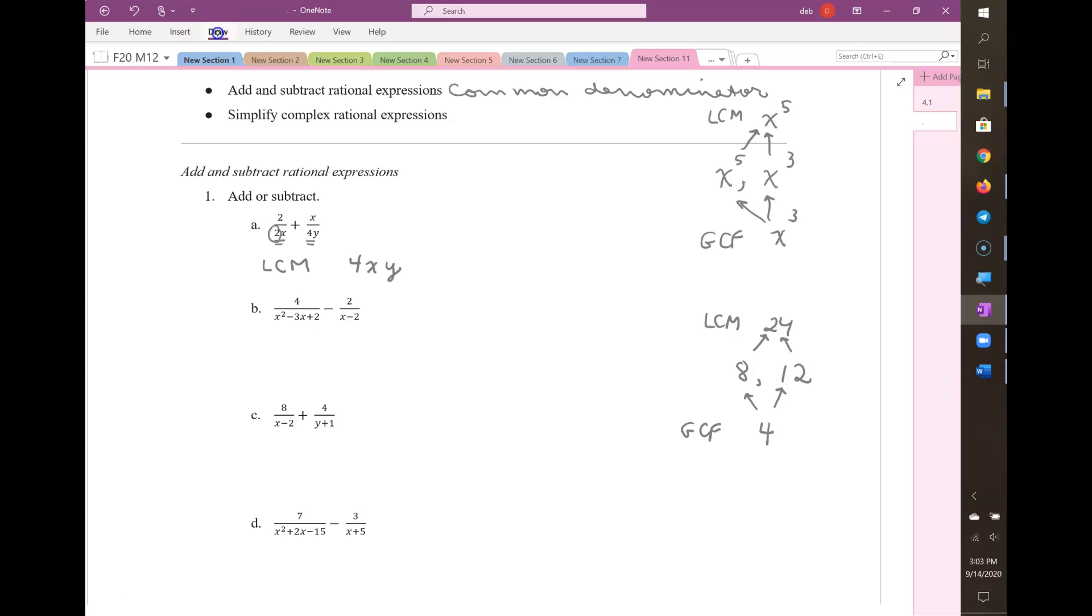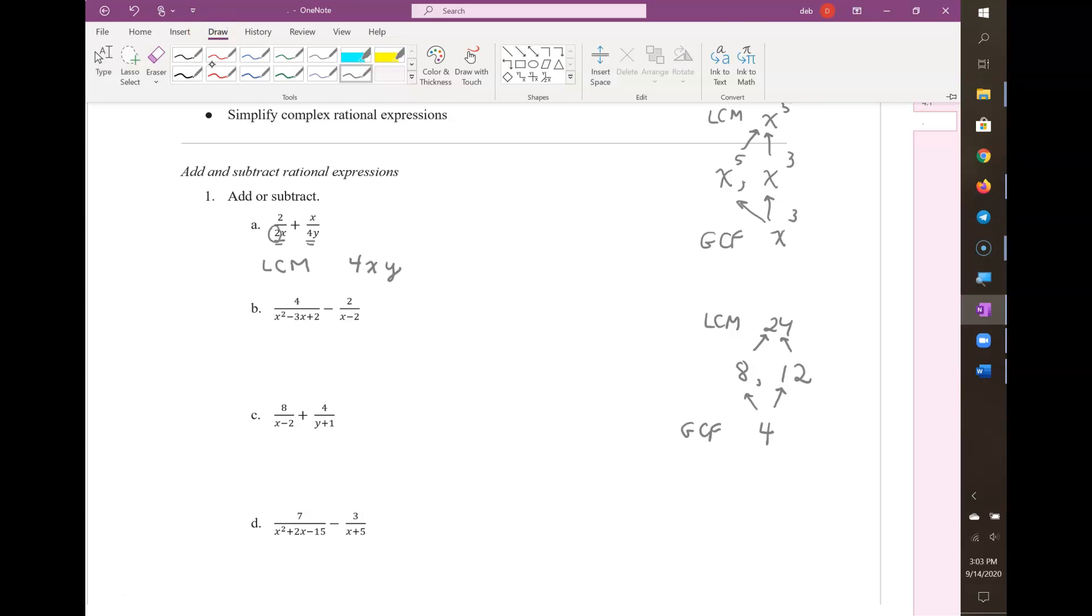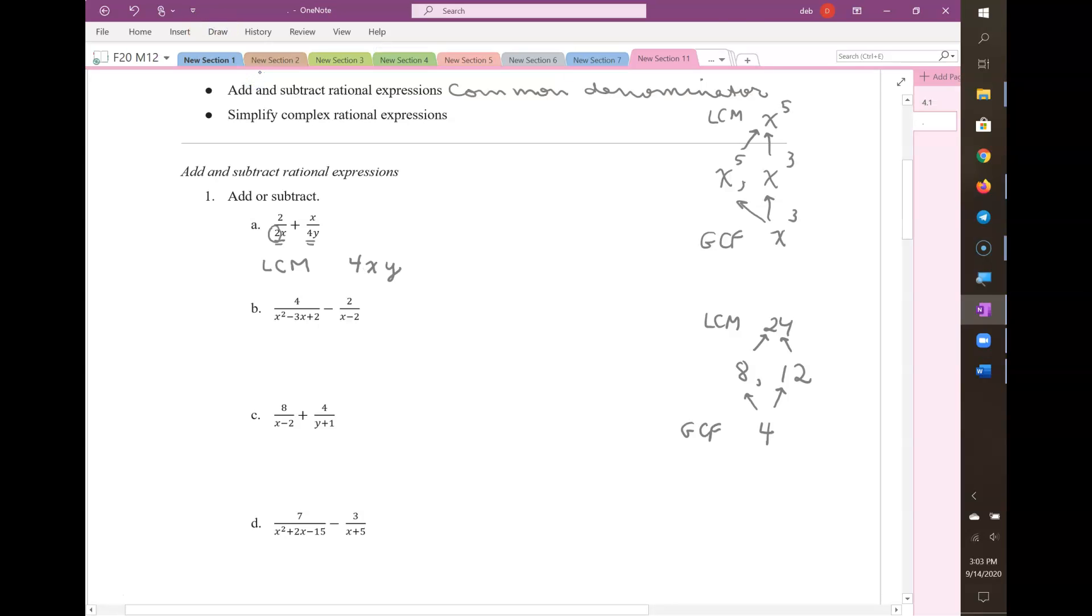I want you to show your process of finding a common denominator really clearly. The first fraction needs another factor of a 2, and a factor of a y, in order to have 4xy as the denominator. We can't just multiply the denominator. You need to multiply the numerator and the denominator by the same thing. No matter what y is, that's 1. So it's legal to multiply by 1, because that doesn't change anything.